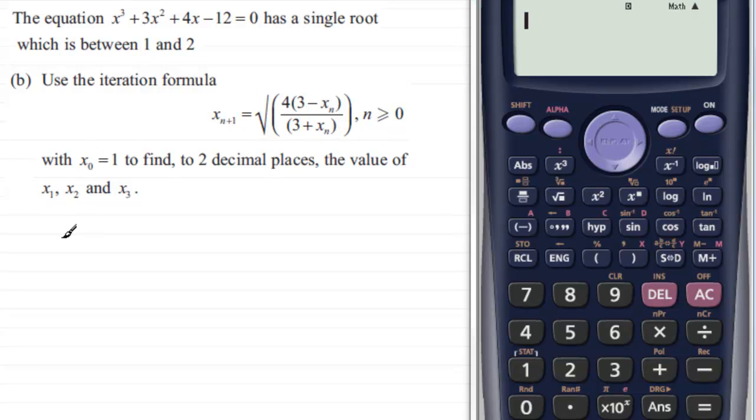What we do is we start with our first approximation, x_0 = 1. Whatever that approximation is, just type it into your calculator - clear it and then enter your 1. When you've done that, press equals. This now becomes the answer, stored into the calculator.